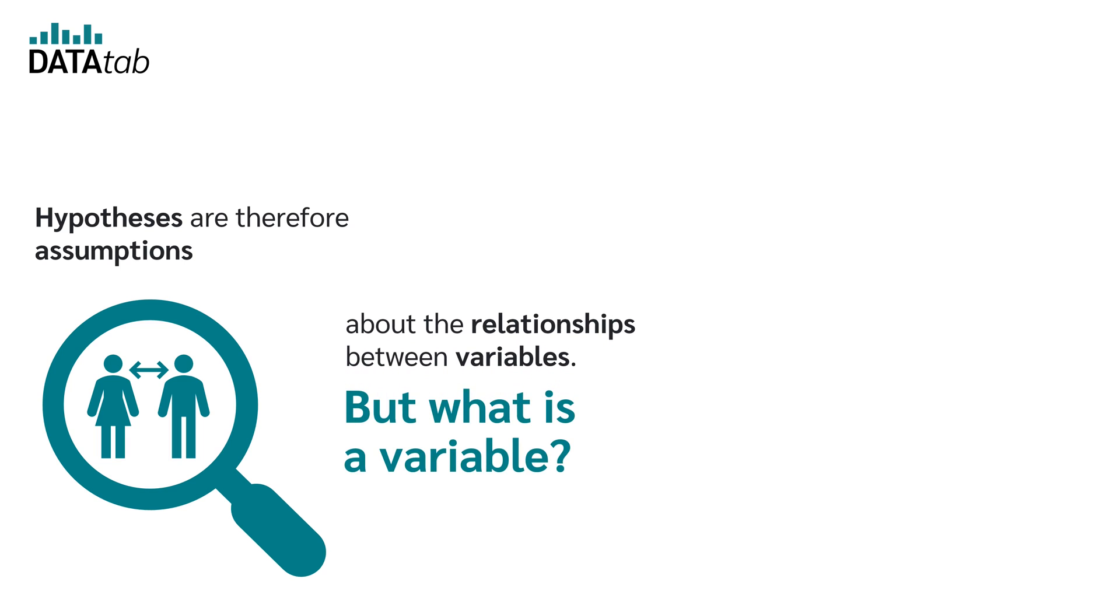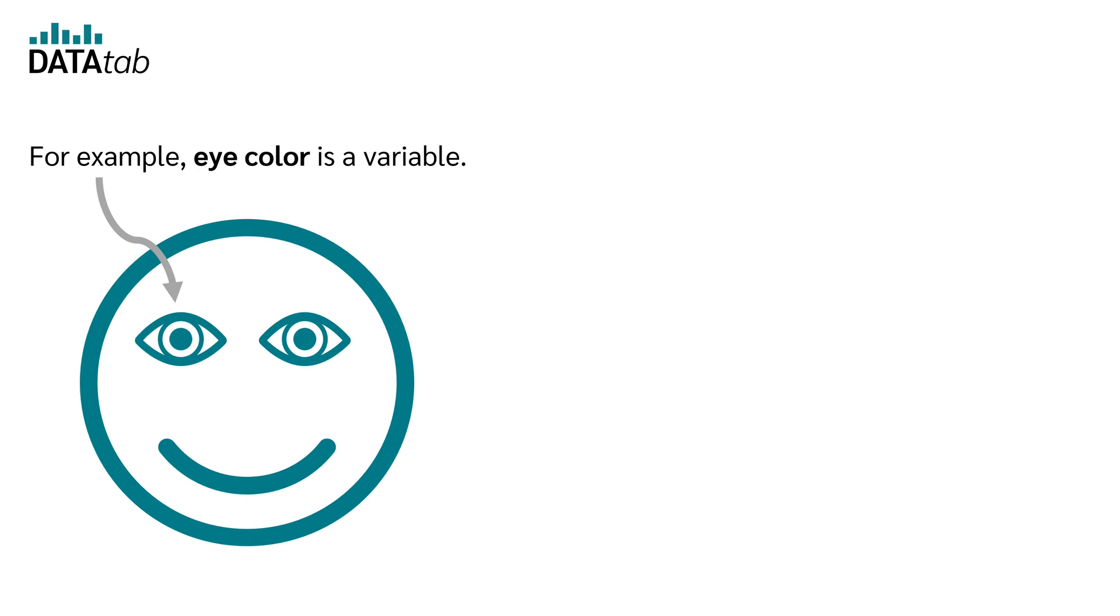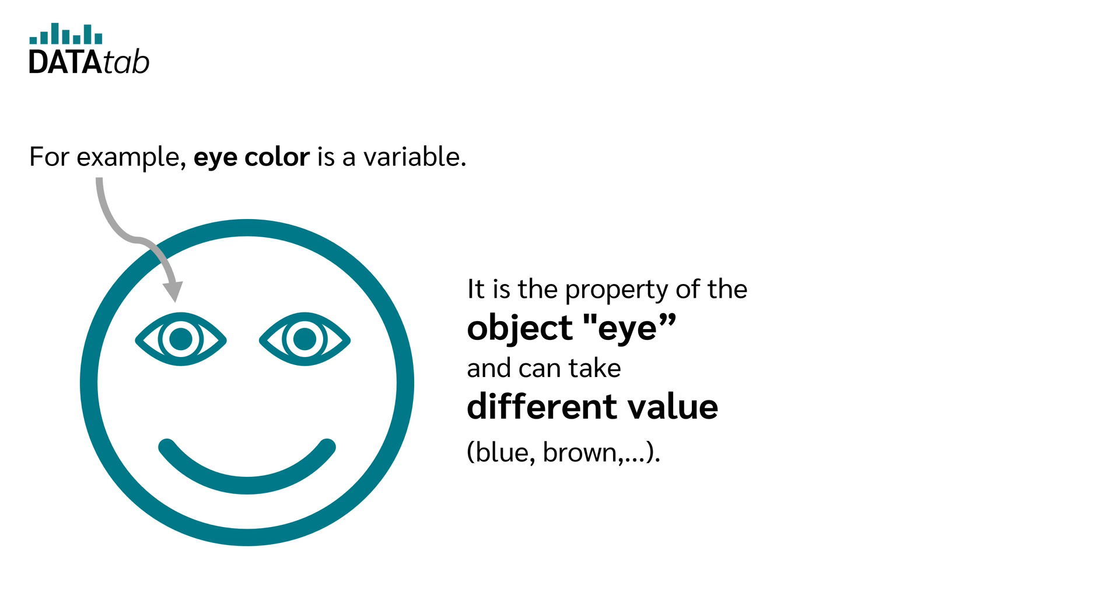But what is a variable? A variable is a property of an object or event that can take on different values. For example, eye color is a variable. It is the property of the object eye and can take different values, for example, blue, brown, and so on and so forth.